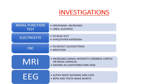What investigations are required to diagnose uremic encephalopathy or end-stage renal disease? The renal function test shows increased serum creatinine and increased serum urea. We do serum electrolytes to rule out electrolyte imbalance like hypo- or hypernatremia. We do a complete blood count to detect leukocytosis or infection. MRI is the gold standard, showing the lentiform fork sign, which means increased signal intensity in the cerebral cortex or basal ganglia. EEG shows alpha wave slowing and loss of beta and theta wave bursts — alpha wave slowing with beta and theta bursts is seen in uremic encephalopathy.